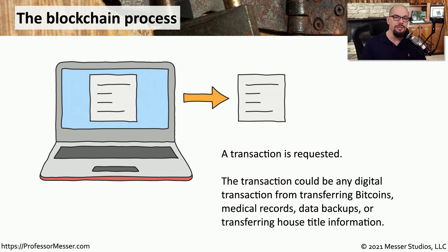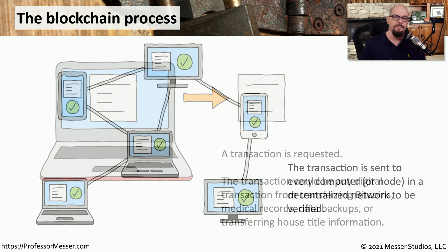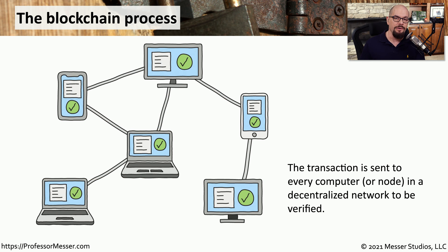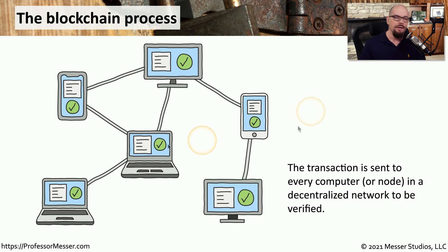The first step is adding a transaction. We might be voting online, adding inventory into a supply chain process, or purchasing something with cryptocurrency. Before the transaction is confirmed and verified, a copy of the transaction is sent to all of the devices participating as part of this blockchain. All of these devices are maintaining ledgers, and they can check balances and other information important for completing the transaction.